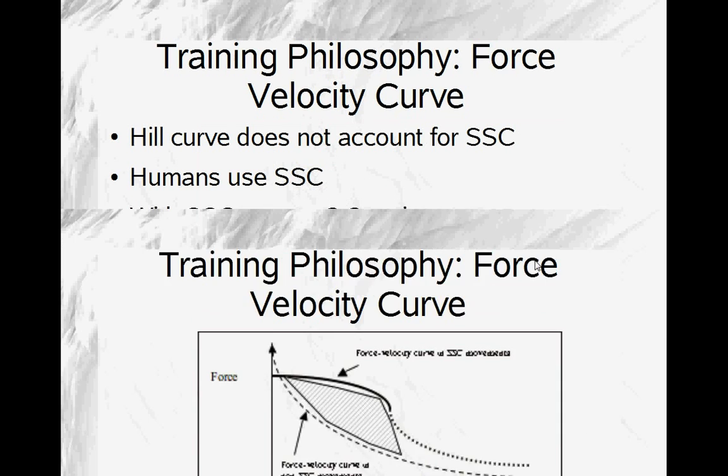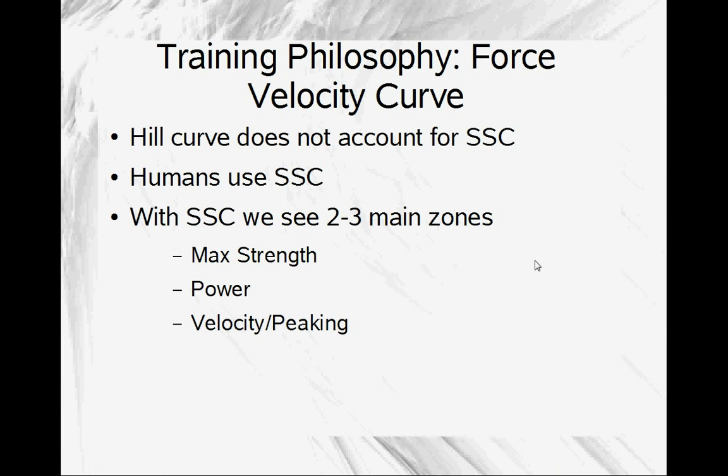So in summary, the force velocity curve, Hill kind of came up with the original force velocity curve, and sadly, it does not account for the stretch shortening cycle. Humans, as we locomote, we use the stretch shortening cycle, we use stretch reflex, we use the elastic abilities of our connective tissues. My master's thesis was on running economy, and using those elastic properties is what running economy is all about.